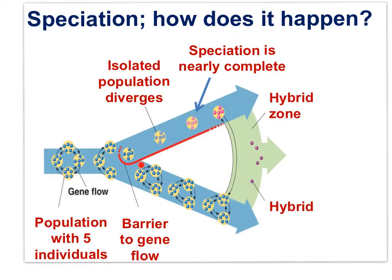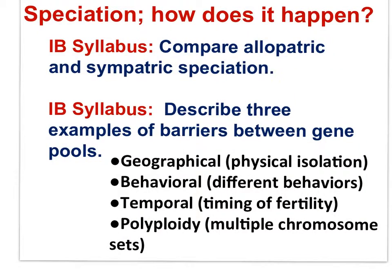Initially, the two populations following the split are the same species, as seen in the blue color. But as isolation progresses, with no sharing of new mutations or genetic change due to selection, the populations become different — notice the pink and blue coloration. In examining speciation, we need to examine the types of barriers that would isolate two populations, resulting in low to no gene flow, such that two species would form. The IB syllabus statements are: compare allopatric and sympatric speciation, and describe three examples of barriers between gene pools.